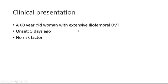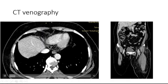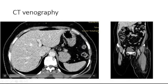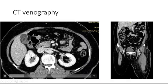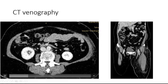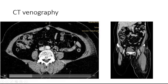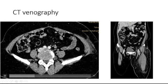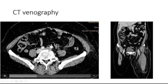Our case is a 60-year-old woman with extensive iliofemoral deep vein thrombosis from about 5 days ago with no risk factor for deep vein thrombosis. Venography shows patent IVC at the proximal part, but at the distal part you can see small thrombosis protruding into the inferior vena cava.